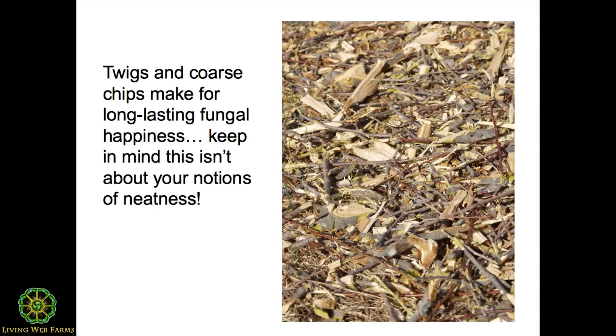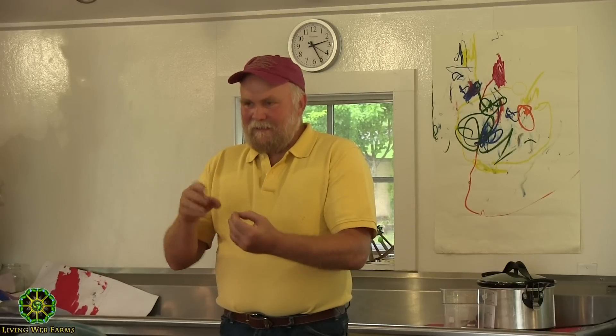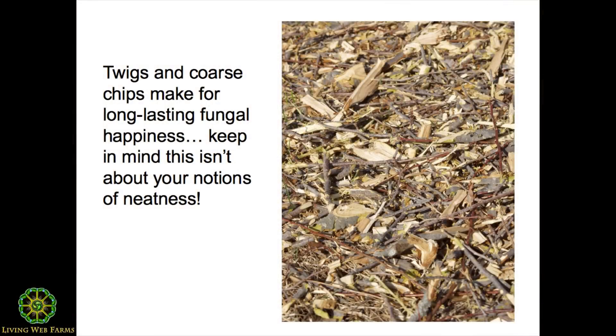Another aspect of this mulching: this is not about some uniform look — this is about forest edge ecology. Big chunks and actual twigs are part of the mulch. The goal is the biology and the long-term breaking down of this organic matter, and the suppression of grasses underneath the fruit tree.